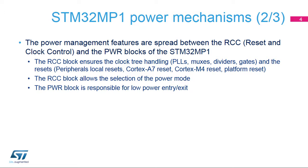The second peripheral is the PWR. It is responsible for low power entry and exit. The RCC and PWR are tightly coupled. They work in coordination to handle all the resources involved in power management: clocks, power supplies, and wake-up signals.